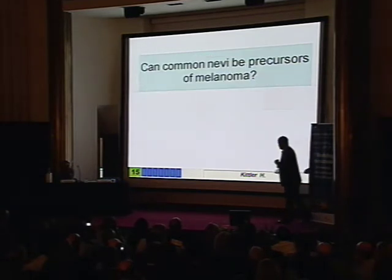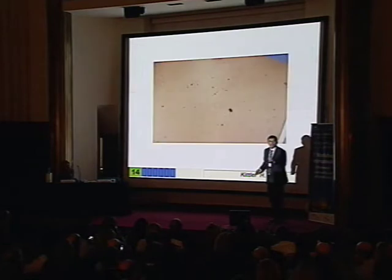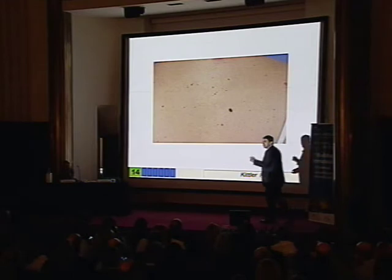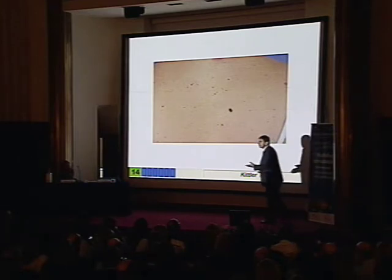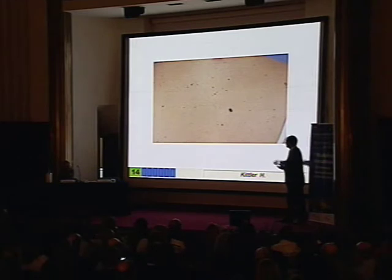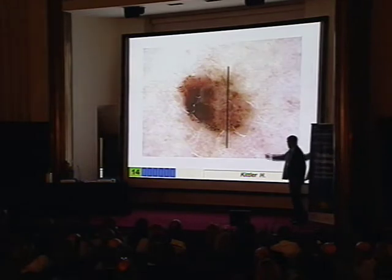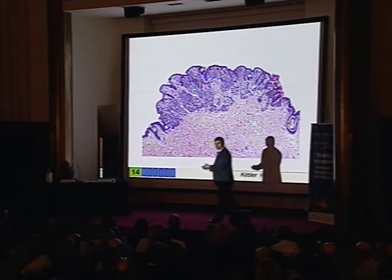Can common nevi or typical nevi be precursors of melanoma, or only atypical nevi? According to my opinion, the most common precursor nevi for melanoma are typical and not atypical at all. The most common precursor nevi are dermal nevi, small congenital nevi. Like in this case here — clinically, dermatoscopically, you can see a cobblestone pattern. If you cut it, you see the histopathology: the most banal congenital nevus, small.